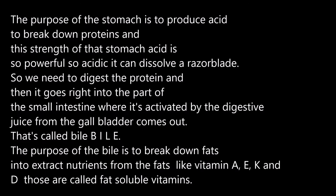The purpose of the stomach is to produce acid to break down proteins. And the strength of that stomach acid is so powerful, so acidic, it can dissolve a razor blade. We need to digest the protein, and then it goes into the part of the small intestine where it's activated by the digestive juice from the gallbladder. That's called bile — B-I-L-E. The purpose of bile is to break down fats and extract nutrients from the fats like vitamin A, E, K, and D. Those are called fat-soluble vitamins.